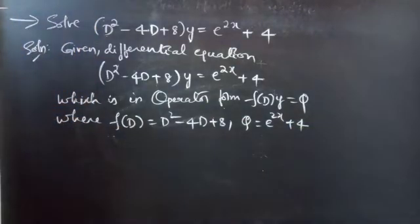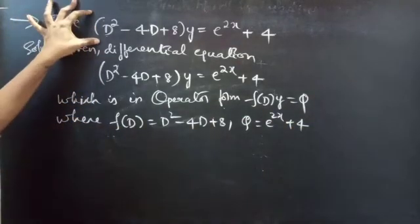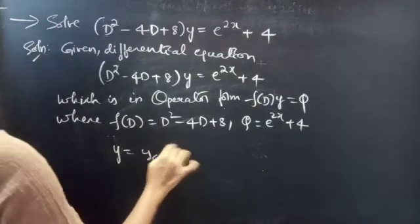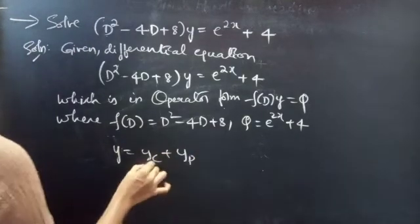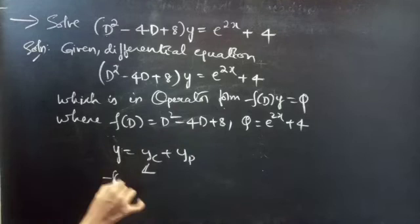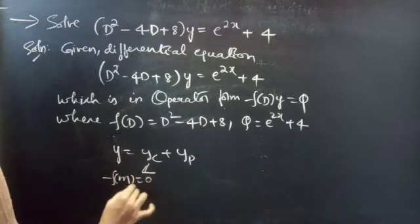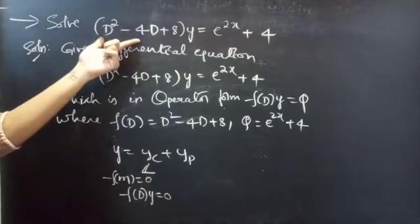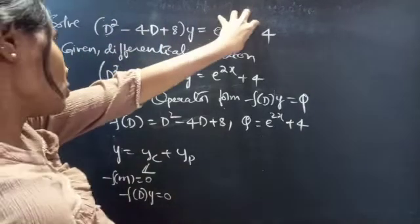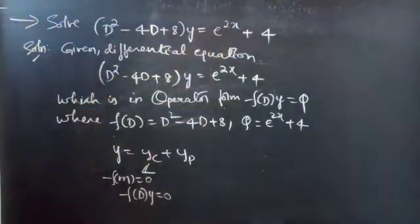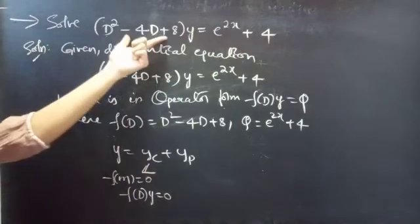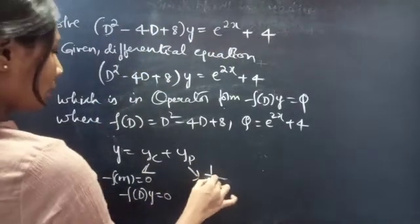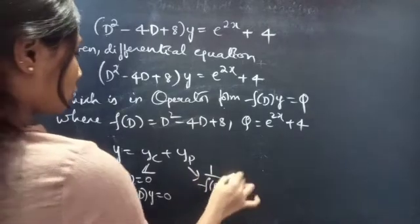We need to find the general solution to the given non-homogeneous equation using y = yc + yp. We will find the complementary function using the roots of the auxiliary equation of the corresponding homogeneous equation, obtained simply by taking RHS to 0: f(D)·y = 0. And yp we can find using yp = (1/f(D))·Q.